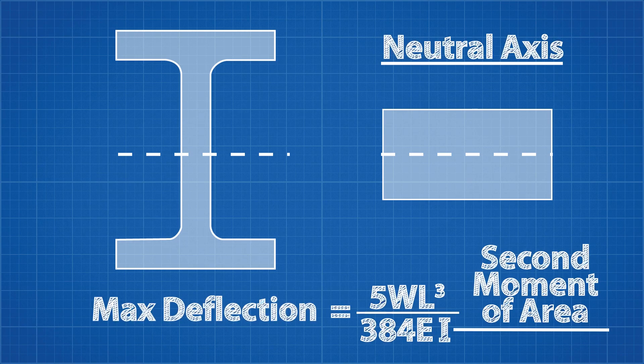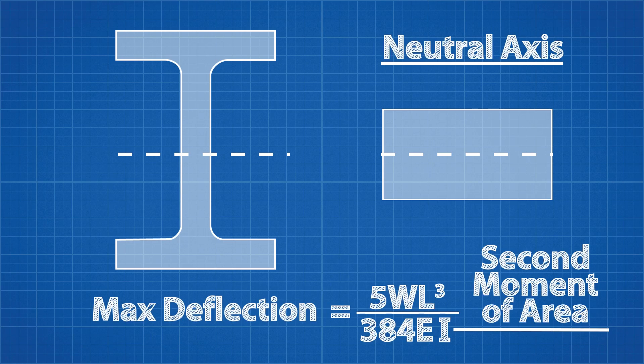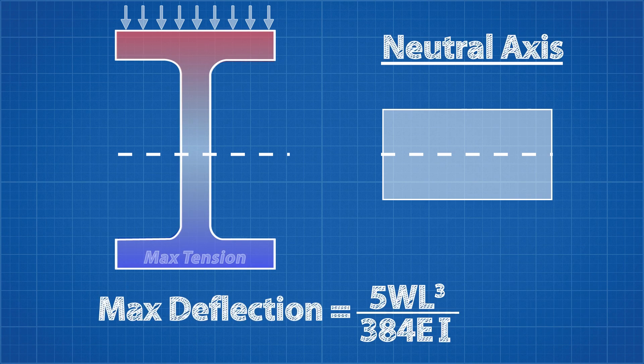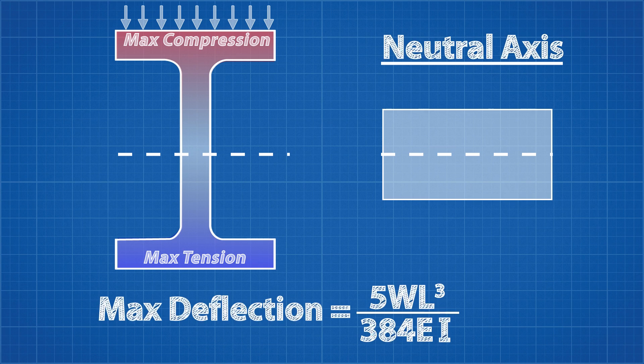It is called the neutral axis because if we place a bending load downward, the beam will bend in a way that will cause the lower edge to be in max tension, and the upper edge to be in max compression, and the values of stress gradually decrease to zero at the neutral axis, where there is neither tension or compression.